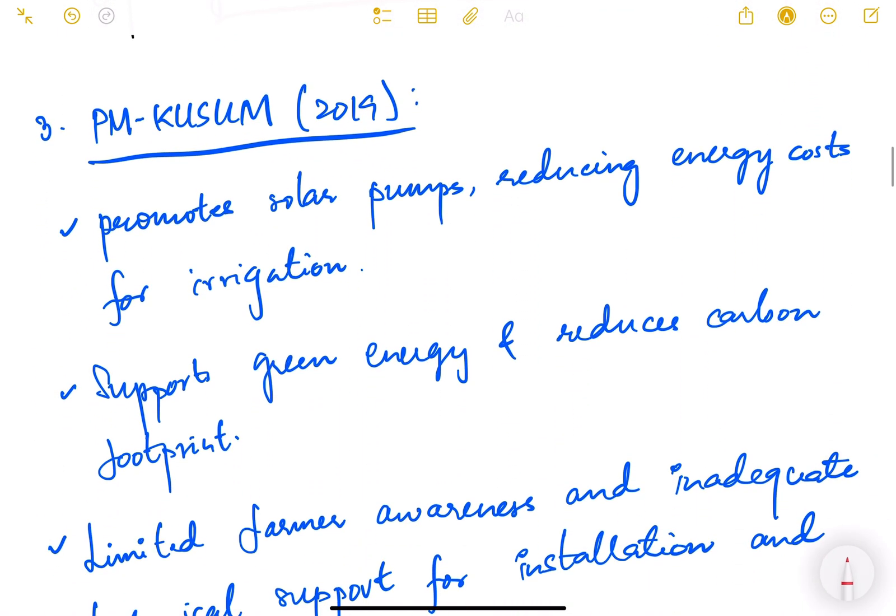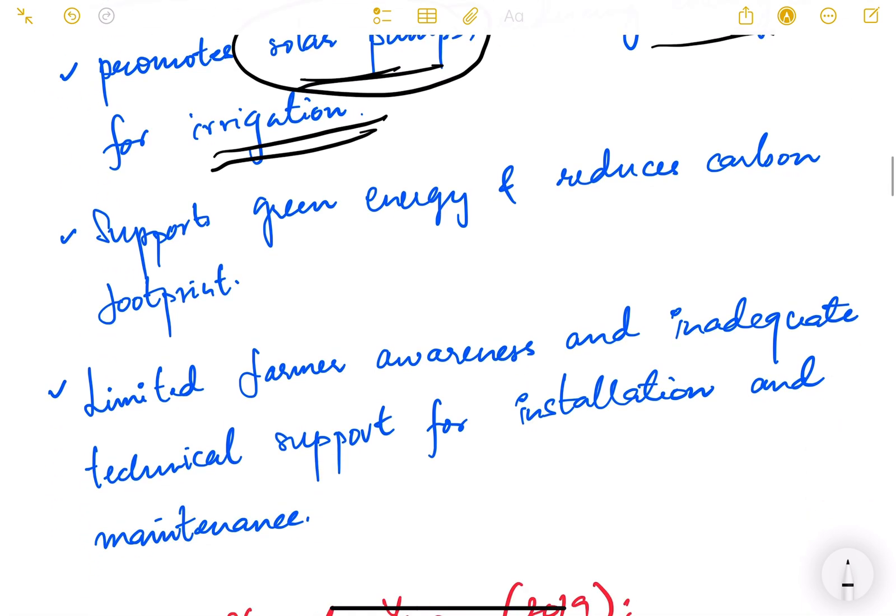Then the next program is PM Kusum. It promotes solar pumps reducing energy cost for irrigation. So instead of using the traditional electricity, it promotes solar pumps. This was launched in 2019. It supports green energy and reduces carbon footprint. This is the benefit of this particular scheme.